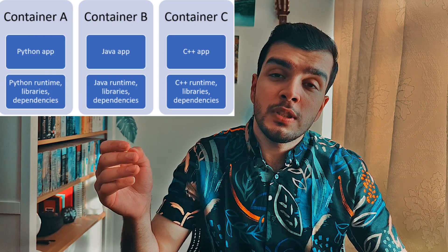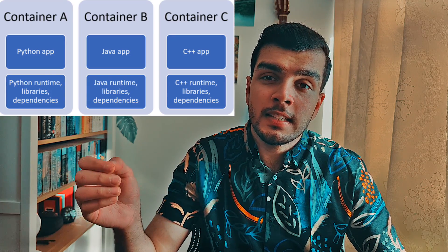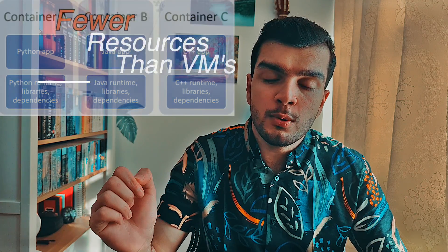The key advantage of using containers is that they use fewer resources than traditional virtual machines. A client can have hundreds of containers and in some cases millions — like every single Google search runs in its own container. So Google is running millions of containers every single minute. To manage all of those containers, you need something called an orchestrator.